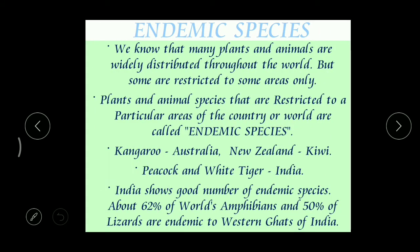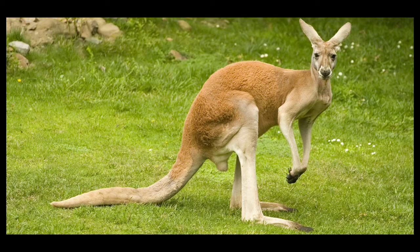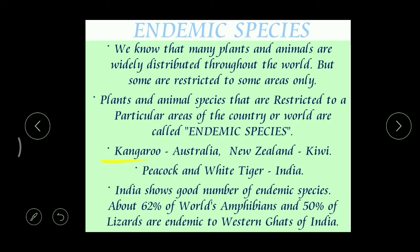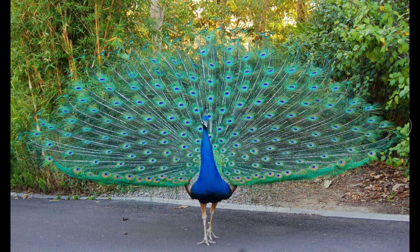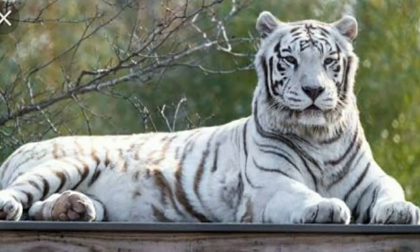The next concept is endemic species. Throughout the world we can find different varieties of plants and animals, but some organisms are present only in certain areas or separate places. For example, the kangaroo - can you find a kangaroo at RTPP or in our area? No. It is present only in Australia. The kiwi - which is an animal, not a fruit - is present only in New Zealand. And the peacock and white tiger are present only in India.